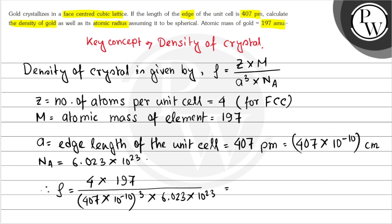So this gives you the density answer as 19.4 grams per centimeter cube. So this is your first part's final answer.